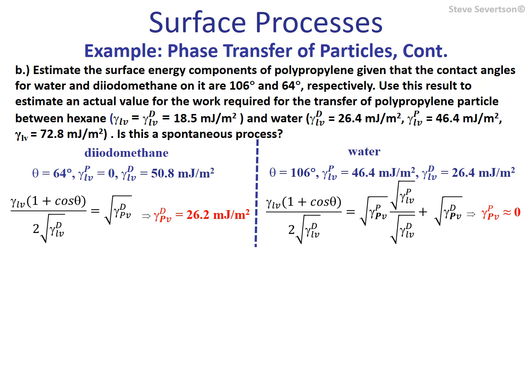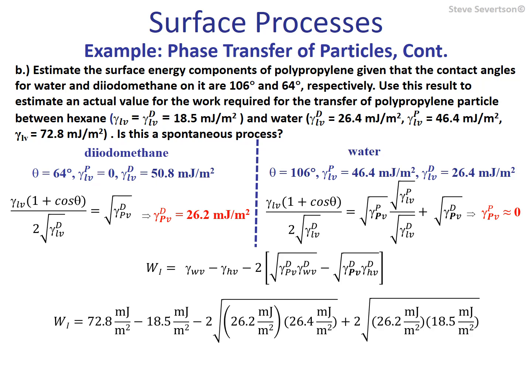A value of 46 millijoules per meter squared is greater than zero — a positive quantity — which indicates that the transfer process of the polypropylene particle between hexane and water is not a spontaneous process. Hopefully, if you consider the materials involved, you would have come to that conclusion without actually having to make these calculations.